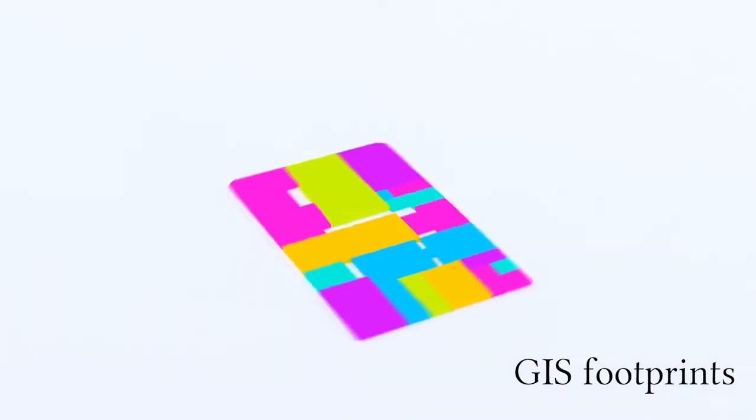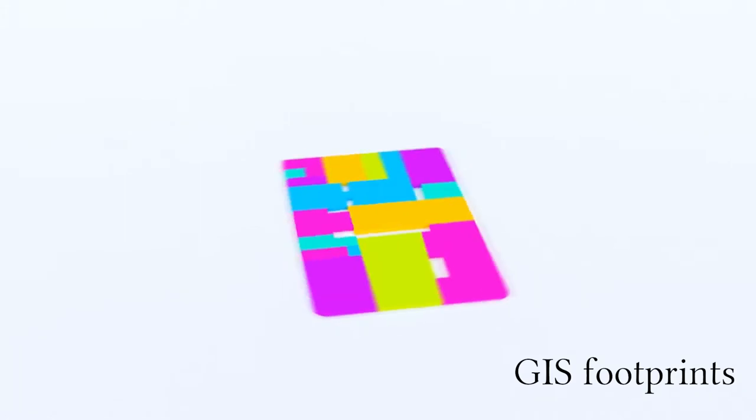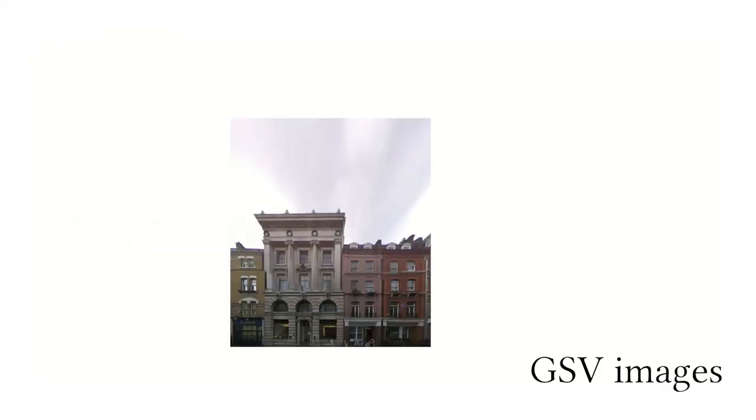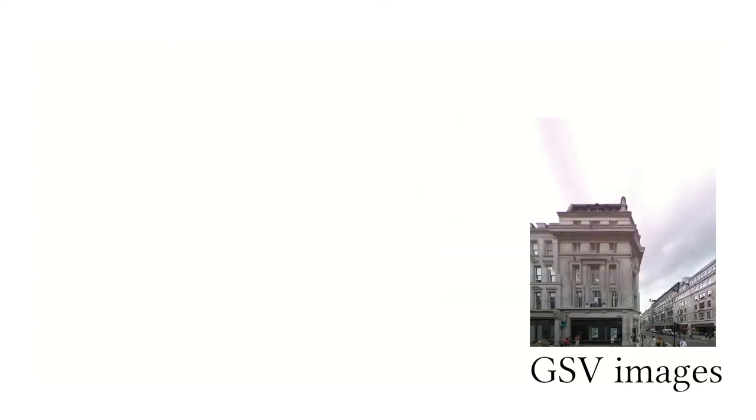The next input is a 2D footprint, typically from a geographic information system. Our third and final input is street-level photography. Google Street View is a typical provider of such images.